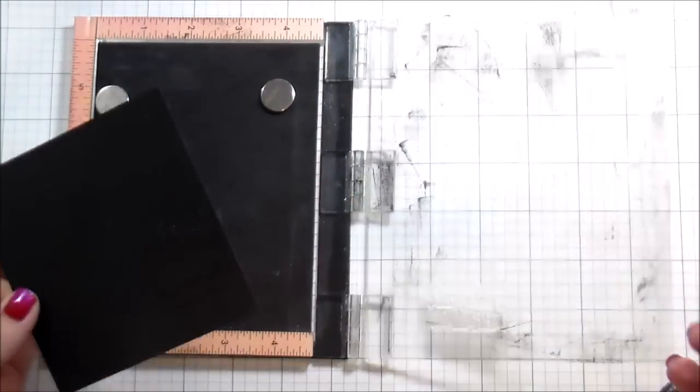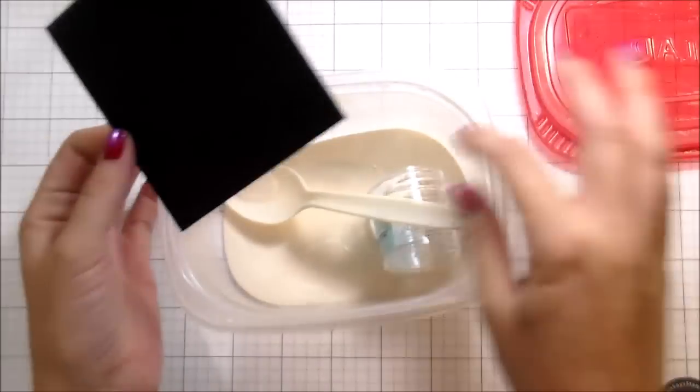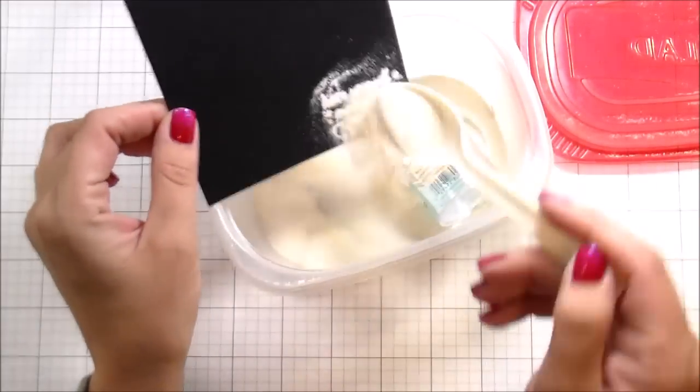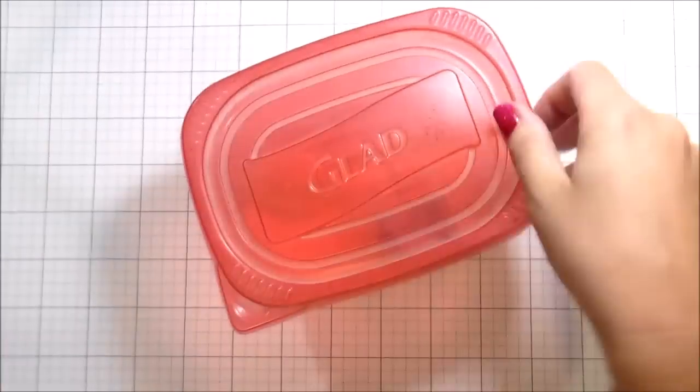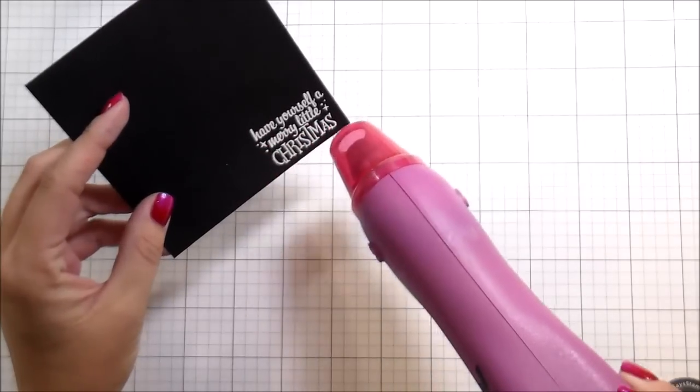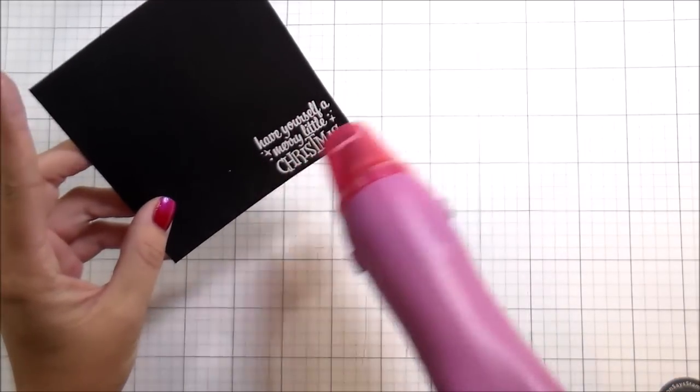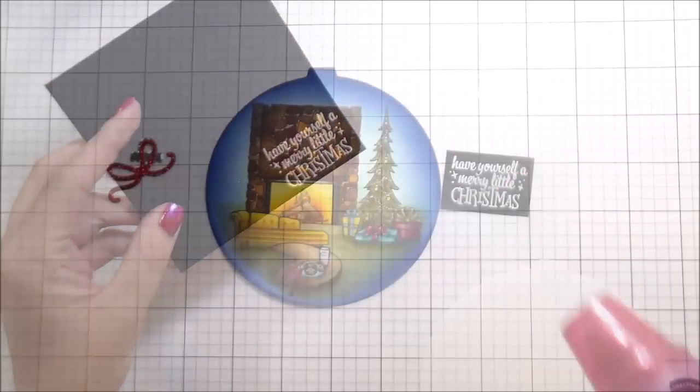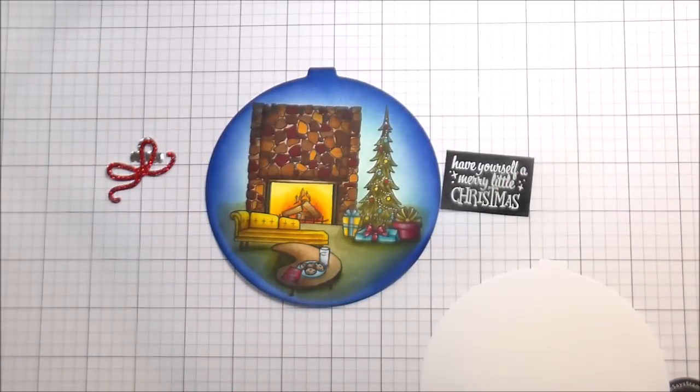I treated my black cardstock with an embossing bag to clear up any static, stamping in Versamark, and then I will sprinkle on some white embossing powder and then heat set that until that's smooth. I know I've said it before, but in case this is your first video, I always have my heat gun heating up while I'm doing this whole process. So that way when I take it to the paper, it sets almost immediately and it really reduces the warping of your cardstock.